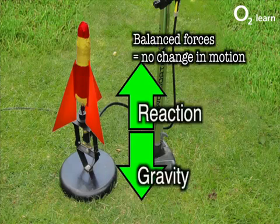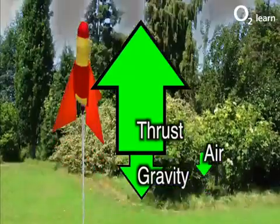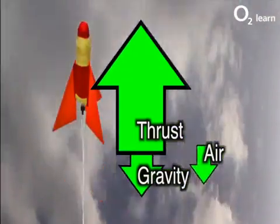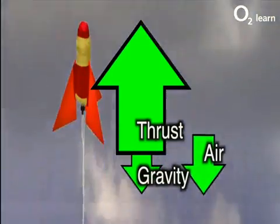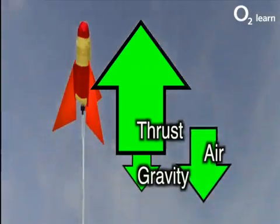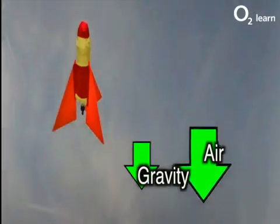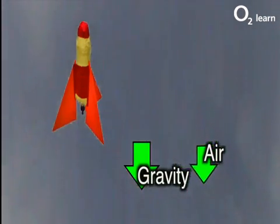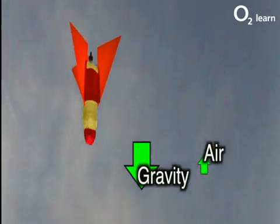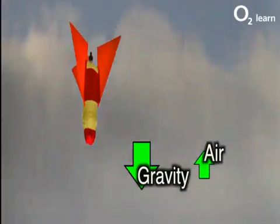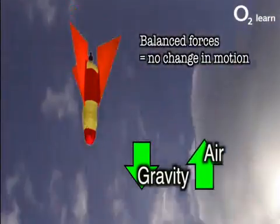There are forces acting now even though nothing is moving. Now the rocket is released. As water is ejected downwards, there's a recoil force pushing the rocket upwards. As the water leaves, the rocket becomes lighter, so the gravitational force gets smaller. Air resistance increases with speed. As the water runs out, thrust force has gone. Gravity and air resistance are the only forces now in action, and they slow the rocket down until it stops. The gravitational pull on the rocket is greater than the air resistance, so the rocket accelerates downwards. At some point these two forces will balance, and the rocket stops accelerating, reaching terminal velocity.